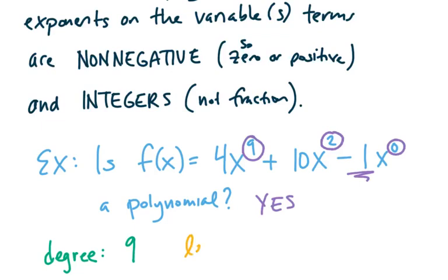Then the leading coefficient kind of follows nicely from the degree. Basically, this is saying, what is the constant multiple on the term with the highest power? So in our case, we can see that 4 is the coefficient on the x to the 9 term. So that would be considered the leading coefficient.